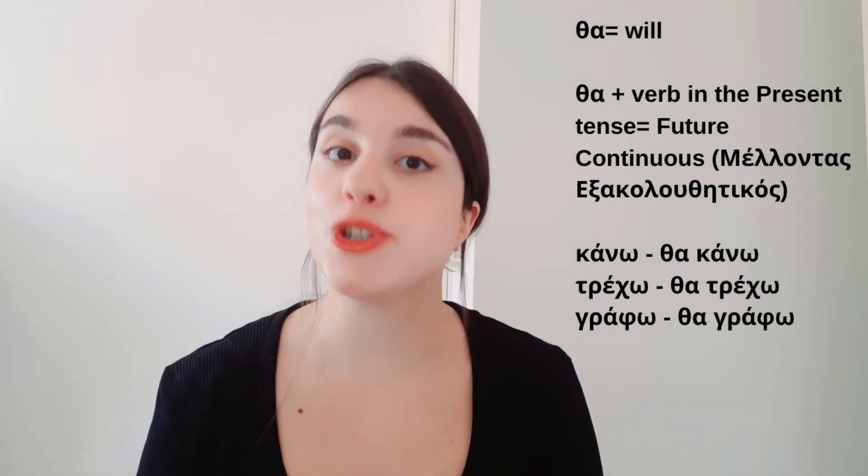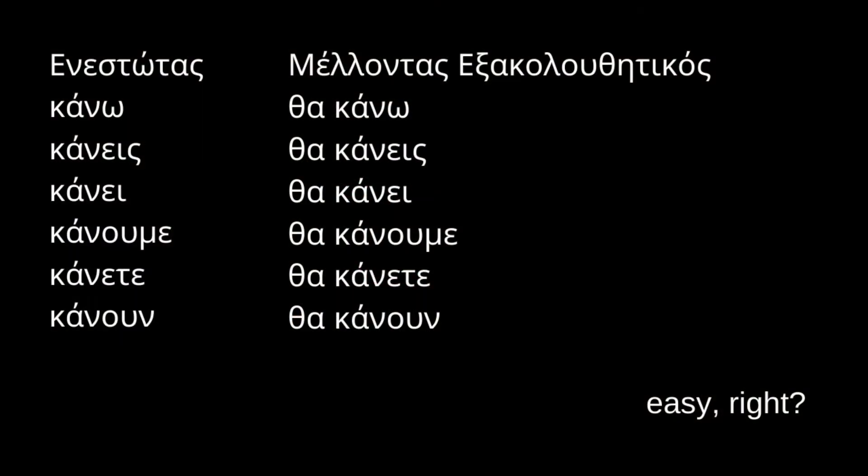Τρέχω means to run — Θα τρέχω, I will be running. So the formation of the future continuous is quite easy: all you have to do is add ΘΑ before the verb in the present tense. For example, the verb Κάνω conjugates as: Κάνω, Κάνεις, Κάνει, Κάνουμε, Κάνετε, Κάνουν. In the future continuous — Μέλλοντας Εξακολουθητικός — it becomes: Θα κάνω, Θα κάνεις, Θα κάνει, Θα κάνουμε, Θα κάνετε, Θα κάνουν. You got the point.